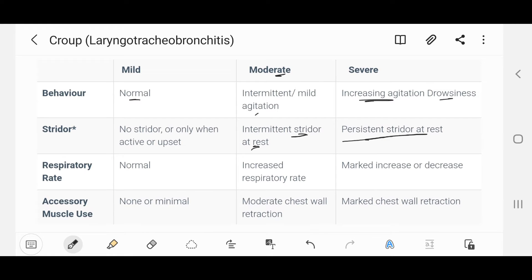As for the respiratory rate, it would be normal in mild. In moderate we'd have increased respiratory rate, and there is a marked increase or decrease in respiratory rate in severe. The accessory muscle use would be none or minimal in mild croup, while in moderate croup we'd find moderate chest wall retraction, and in severe we'd find marked chest wall retraction.